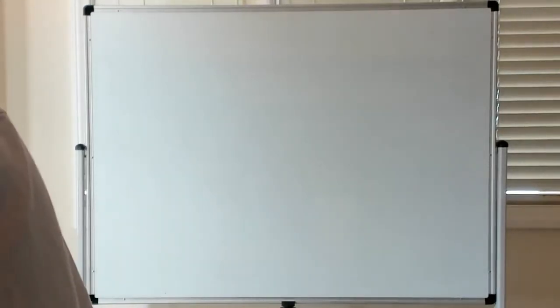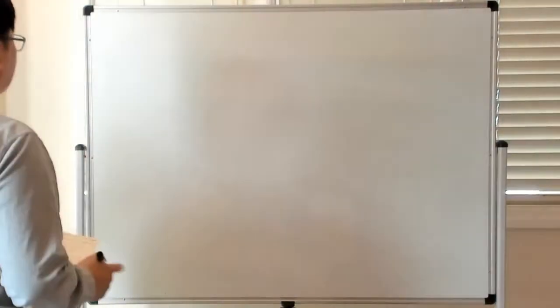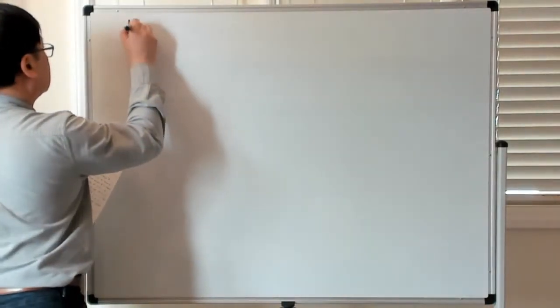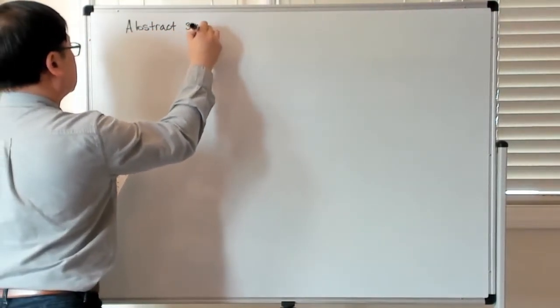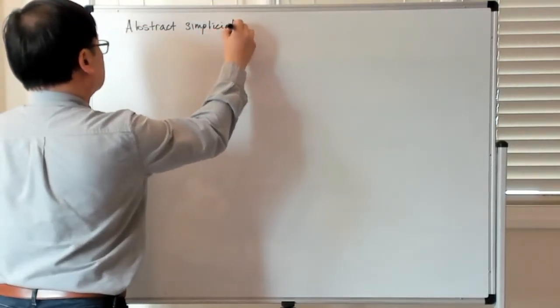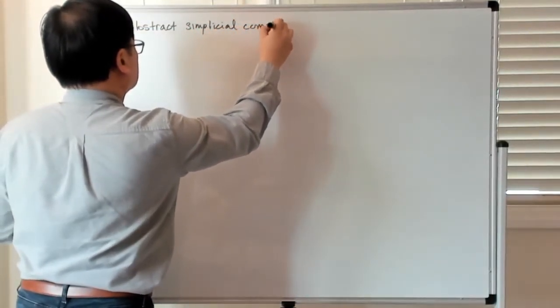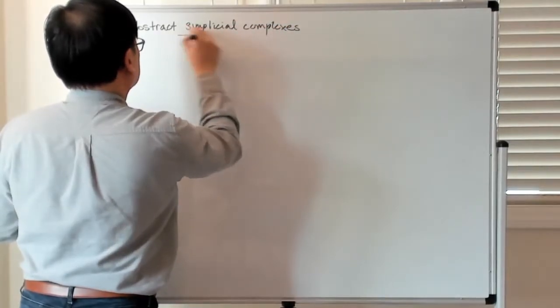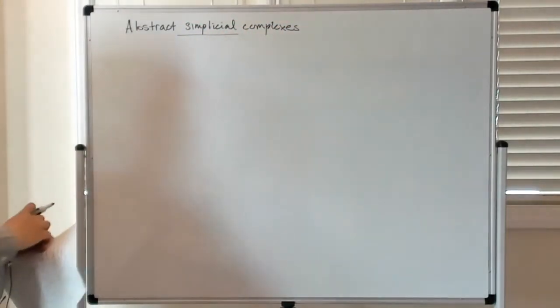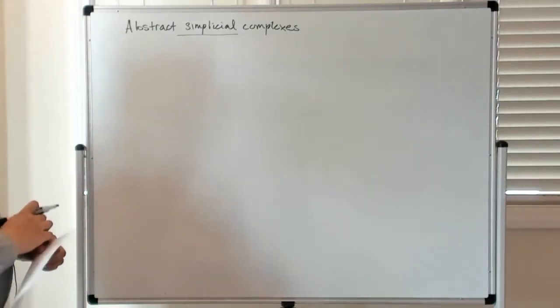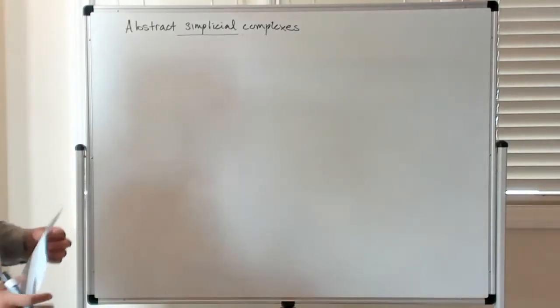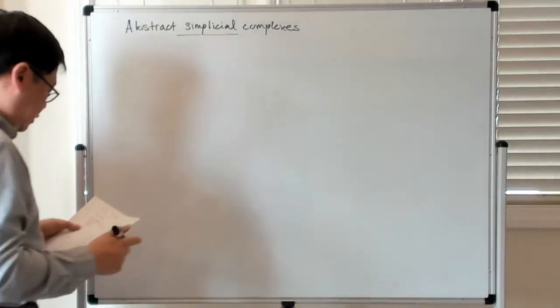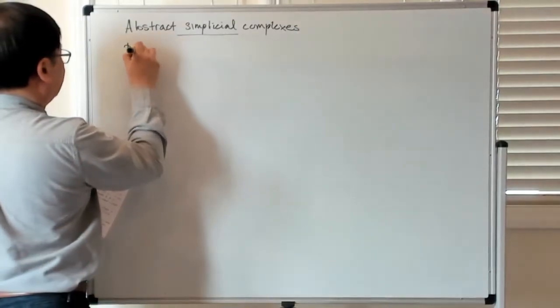Alright, so now we're going to talk about abstract simplicial complexes. Essentially this is when we just think of these simplicial complexes consisting of sets of vertices and forget, in some sense, the geometric realization or embedding of it in an ambient space. So let me give you a definition.